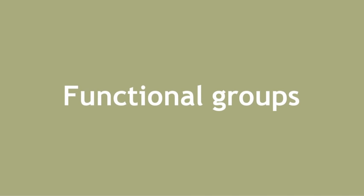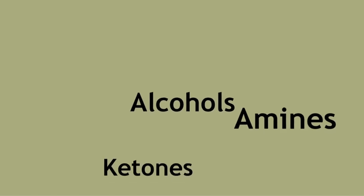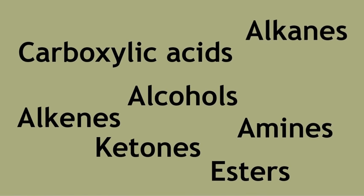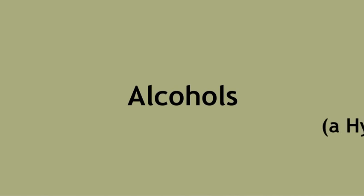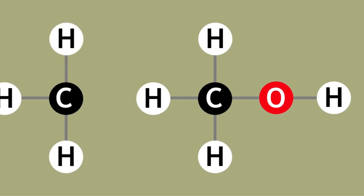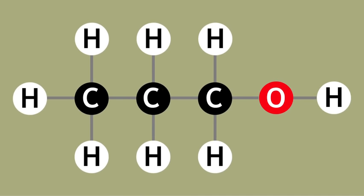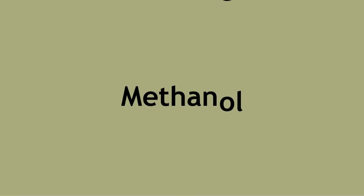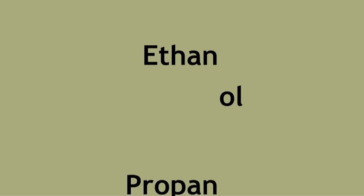Functional groups are groups of atoms which give molecules similar properties. There are many different functional groups. You may have heard of the alcohol group. This is a hydroxyl group and is a hydrogen bonded to an oxygen which is then covalently bonded to the rest of the molecule. This group can be attached to any of the alkanes to form alcohols, their name all ending in -ol. For example, methanol, ethanol, and propanol.